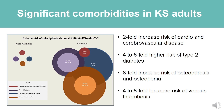While phenotypical severity is not well understood, research in the past decade has shown that there can be an increased risk for significant medical comorbidities. These would include a two-fold increased risk of cardio and cerebrovascular disease, four- to six-fold higher risk of type 2 diabetes, an eight-fold increased risk of osteoporosis and osteopenia, and a four- to eight-fold increased risk of venous thrombosis. There is also a higher reported percentage of adults that show psychological and behavioral issues such as depression, anxiety, and autism spectrum disorders.